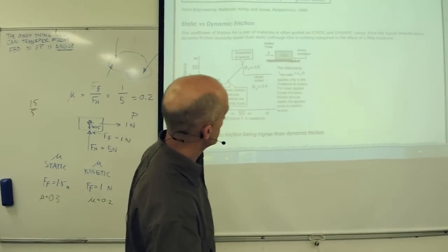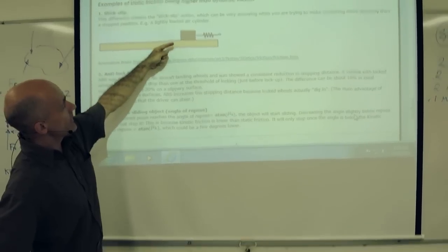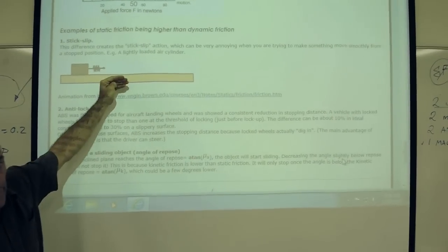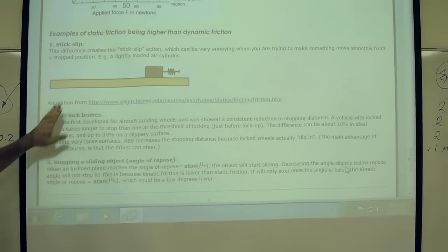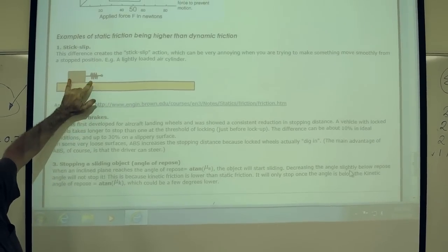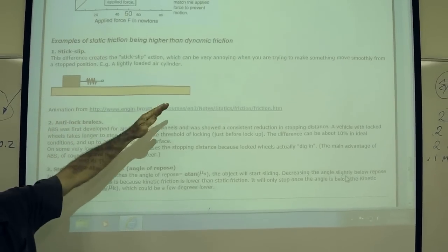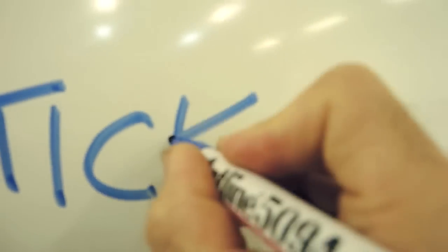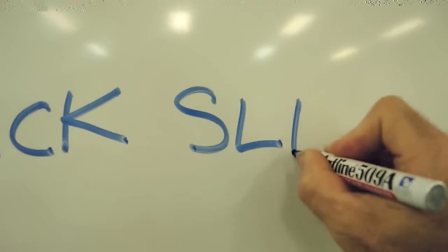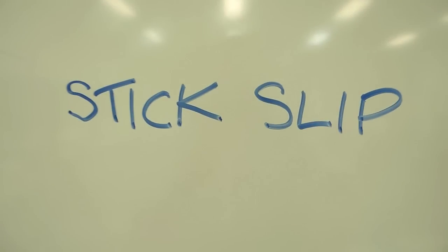This turns out to be quite common in engineering. We're pulling the mass and then it won't move, and then suddenly breaks free—the stick-slip phenomenon. So it sticks there for a minute until the force builds up, and then it suddenly slips. This is usually annoying. You usually don't want this. If you're trying to get a nice smooth motion and you get this, you'll end up with vibration.